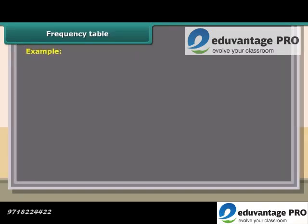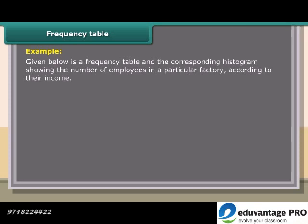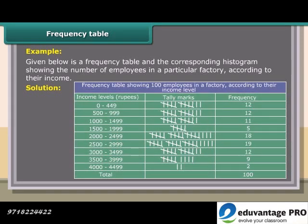Example: Given below is a frequency table and the corresponding histogram showing the number of employees in a particular factory according to their income. Solution: Frequency table showing 100 employees in a factory according to their income level.